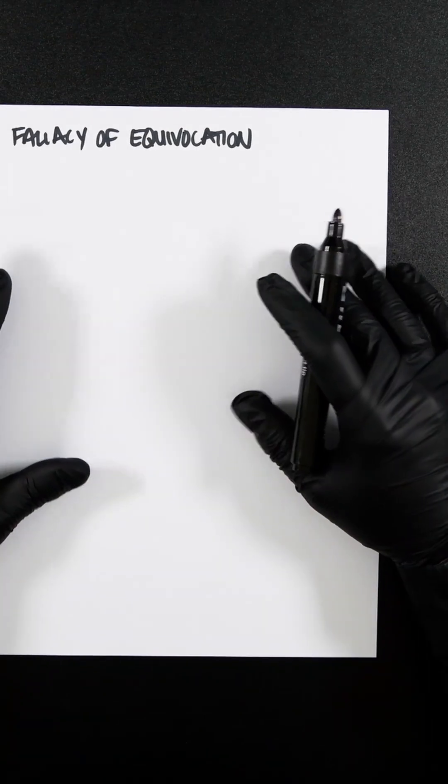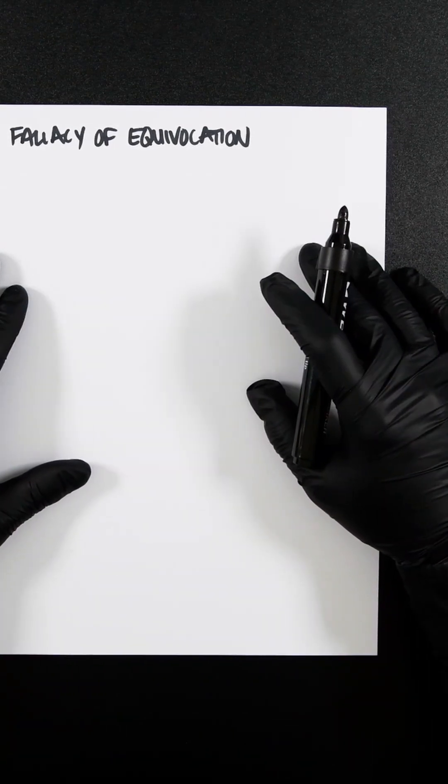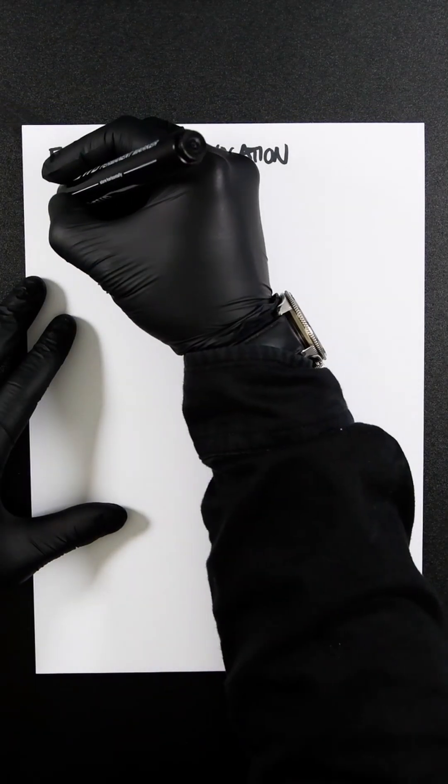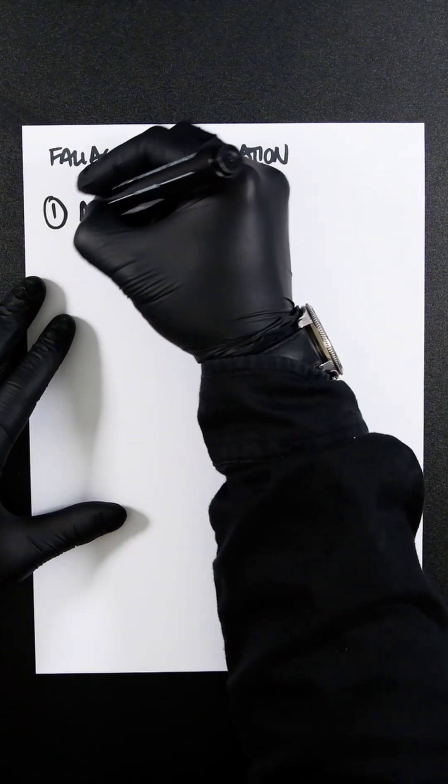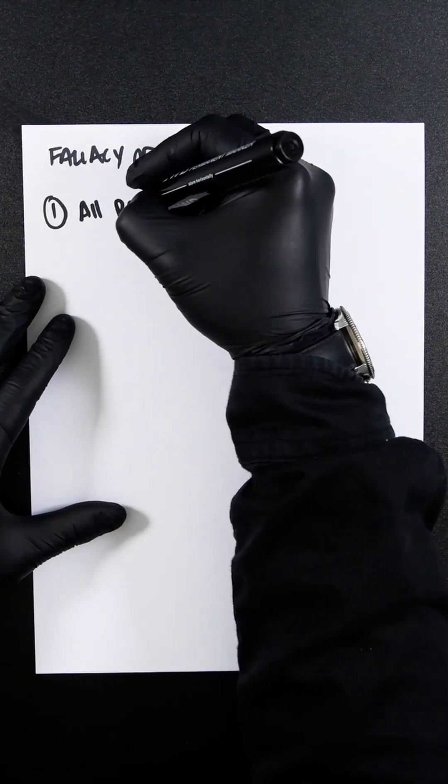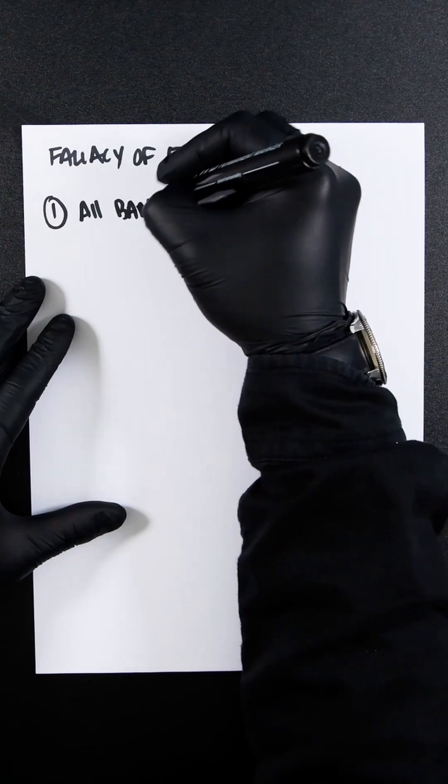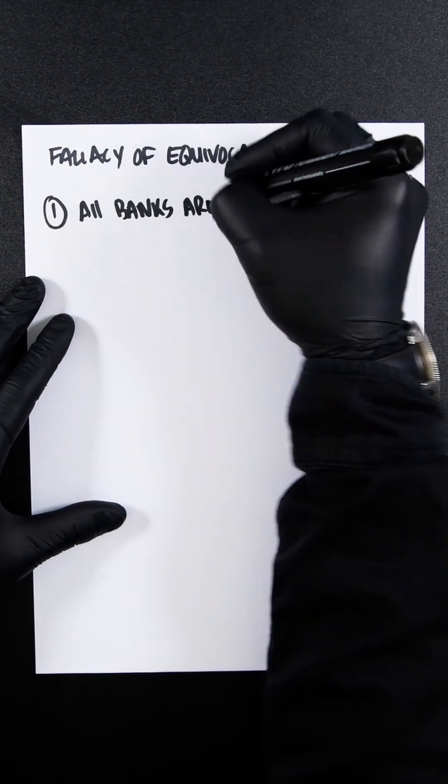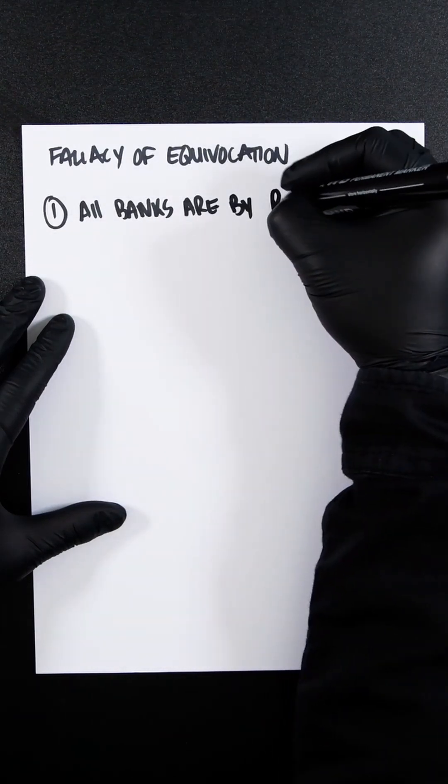So let's try and represent this in predicate logic. Let's say we have our first statement, which is all banks are by rivers.